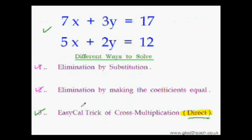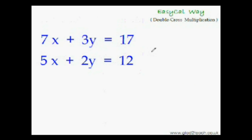So now let me teach you this very powerful easy cal trick to directly solve simultaneous equations. Now to find the value of x, what we do? We choose this 3 that is the middle coefficient of the first equation as the starting point. And then we do cross multiplication. That is multiply this 3 with this 12 and subtract from it what we get on multiplying this 2 with this 17.